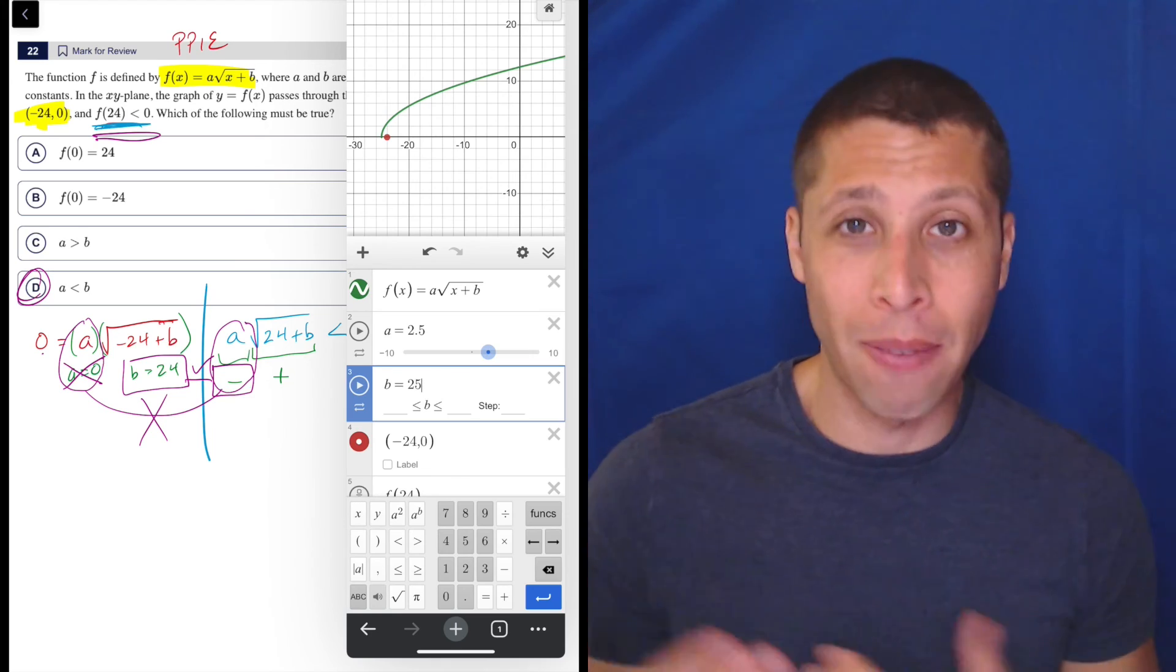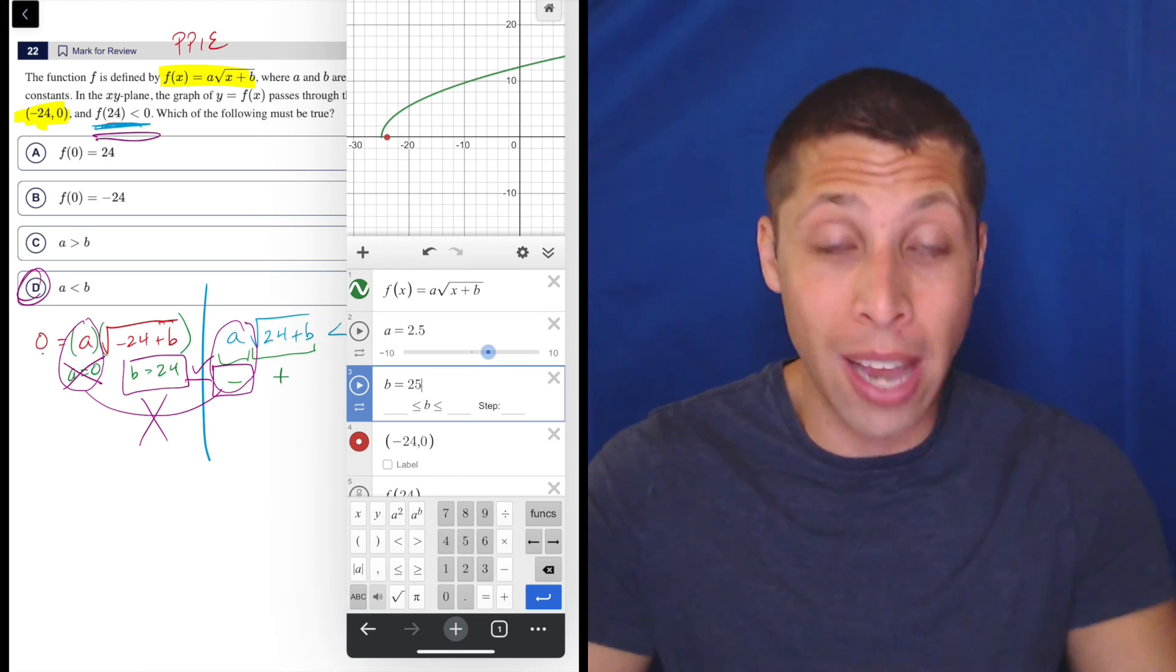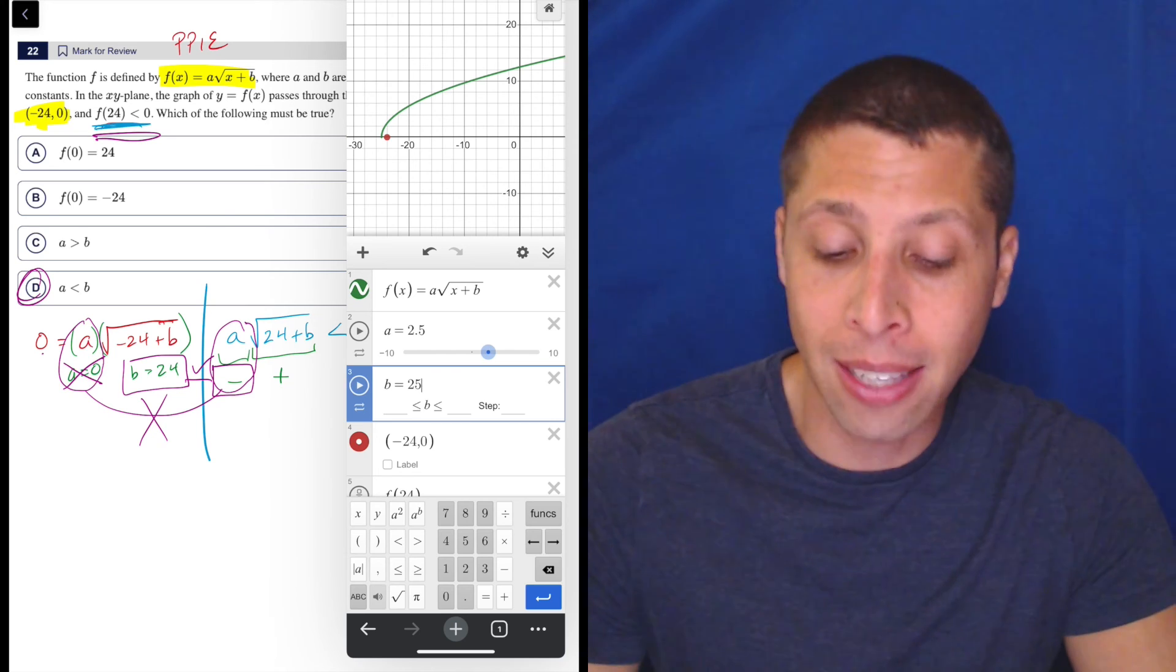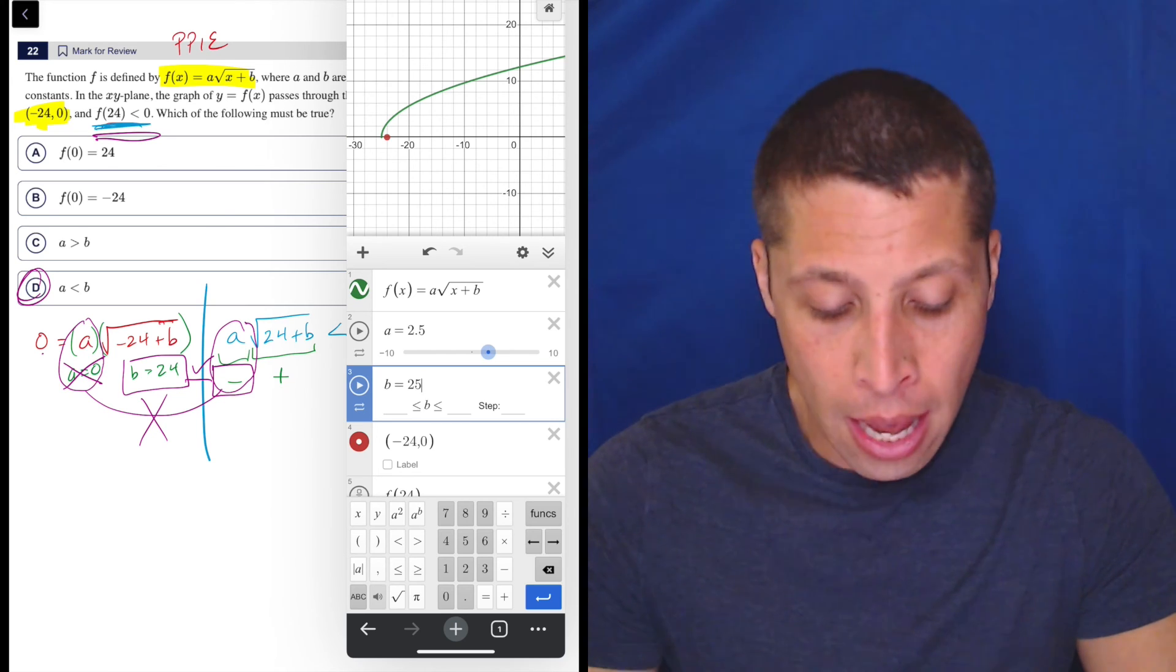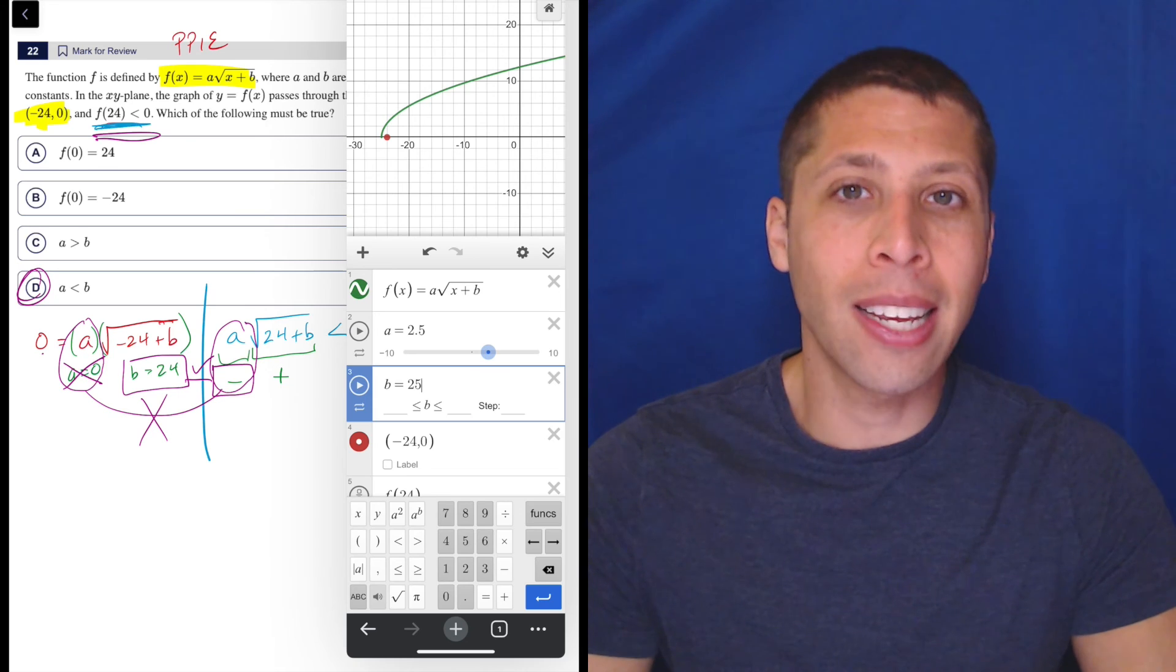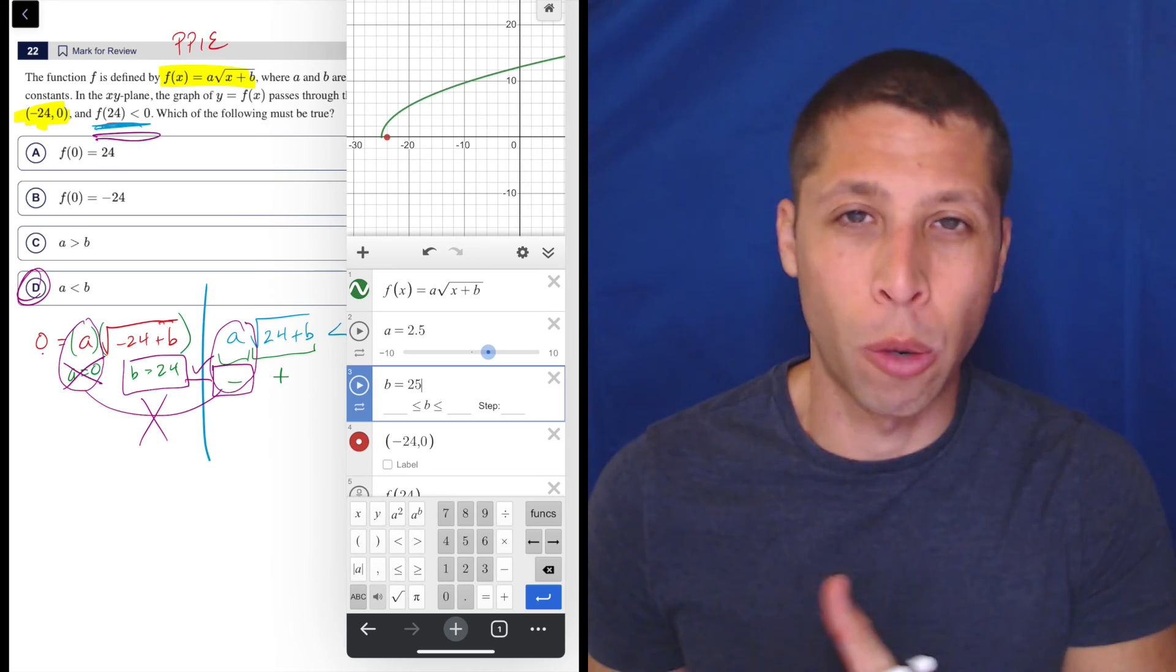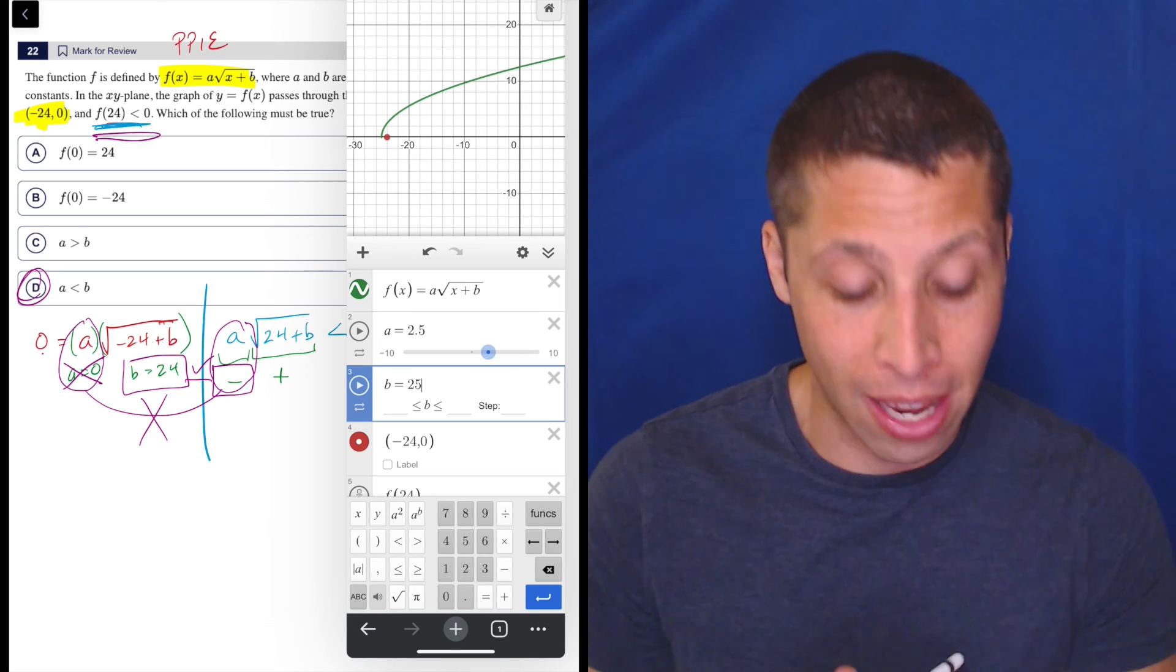And this is the great thing about Desmos having this slider is you can move things and test and arithmetize in lots of different ways very, very quickly. But I really think that you got to get something to latch on to for a question like this.